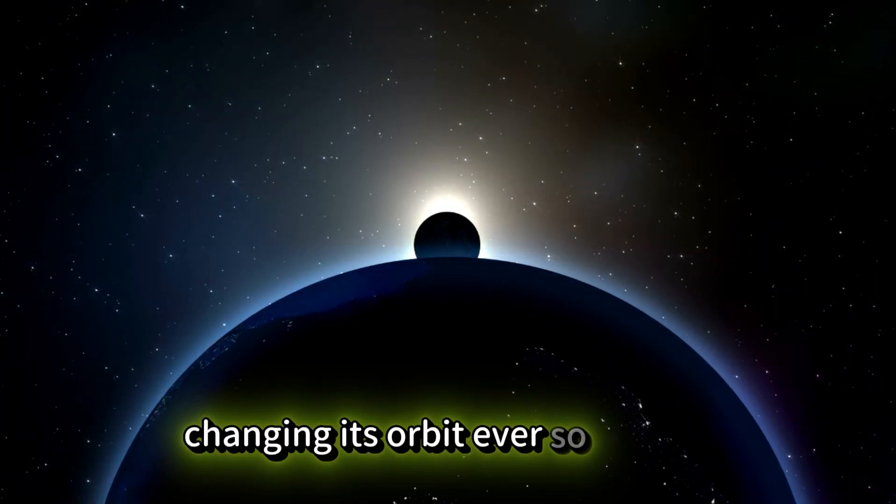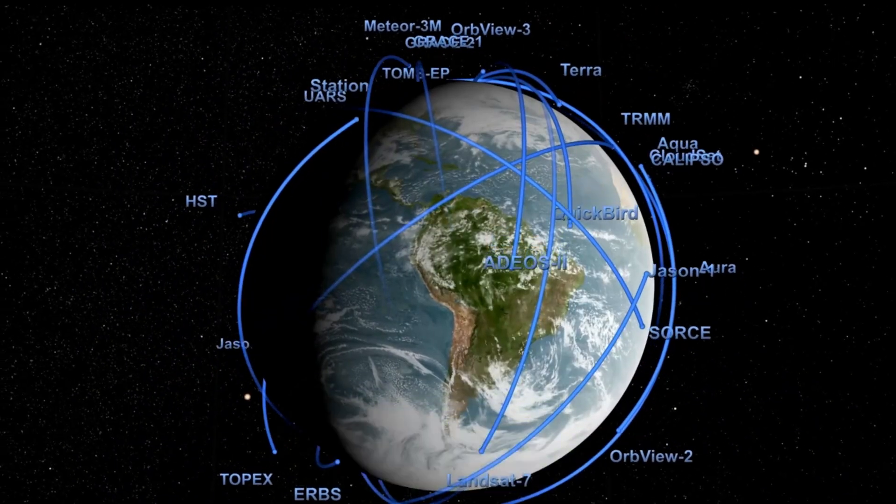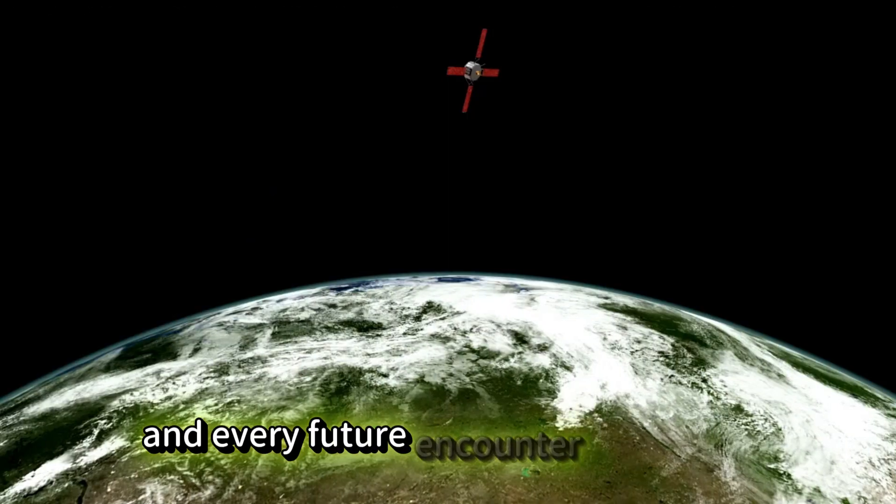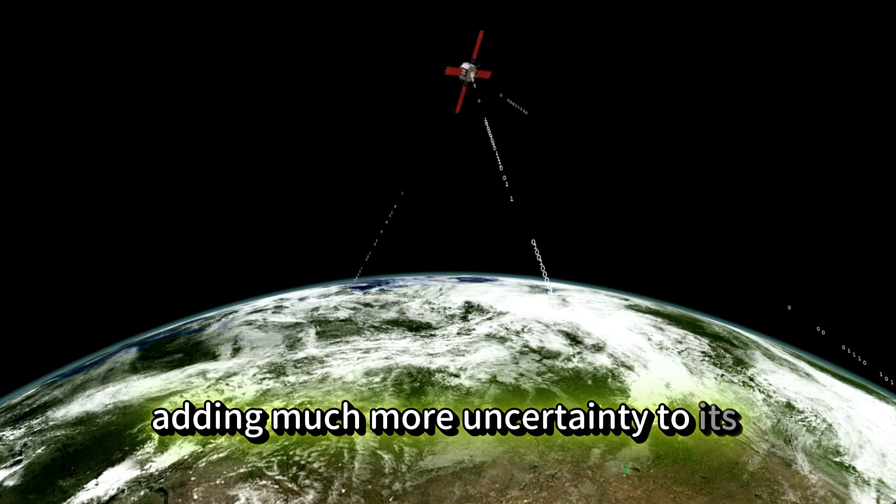We know where Snoopy went after it left the moon. The problem is all of this is based on just a few days worth of data after Snoopy separated, and every future encounter with Earth would have changed its trajectory, adding much more uncertainty to its location.